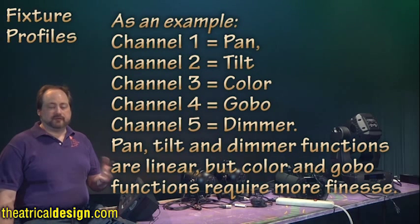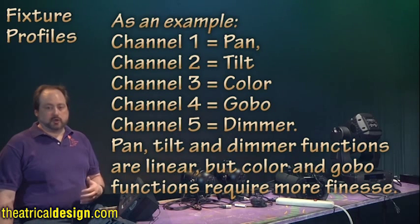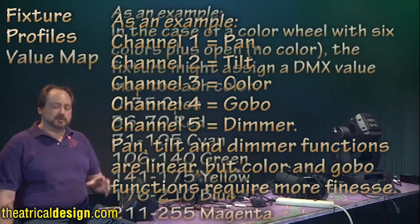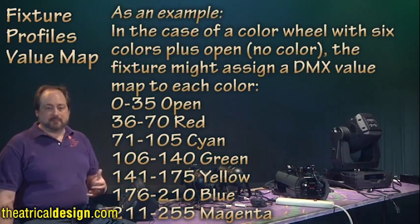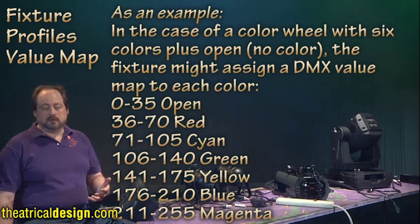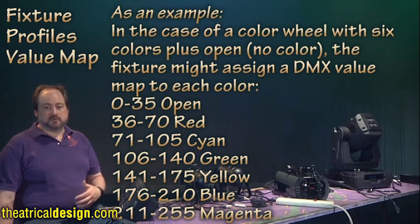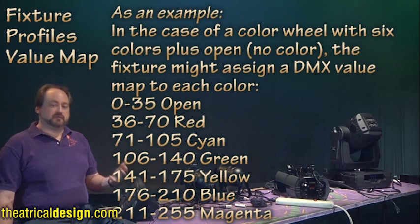Pan, tilt, and dimmer functions are linear, but color and gobo functions require more finesse. In the case of a color wheel with six colors plus open (no color), the fixture might assign a DMX value map to each color. For example, 0 to 35 might equal open, 36 through 70 equals red, 71 to 105 cyan, 106 to 140 green, 141 to 175 yellow, 176 to 210 blue, 211 to 255 magenta.